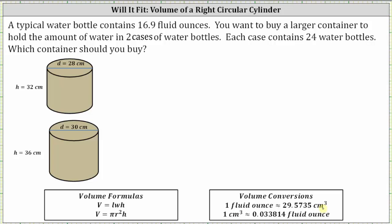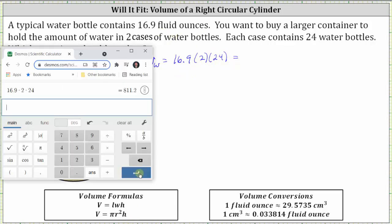Let's call the volume of the water V sub W. V sub W is equal to the amount of water in one water bottle, which is 16.9 fluid ounces, times the number of water bottles, which is two times 24, because you have two cases of water bottles each containing 24 water bottles. This product gives us the volume in fluid ounces, which is 811.2.